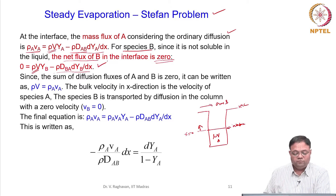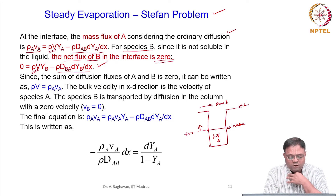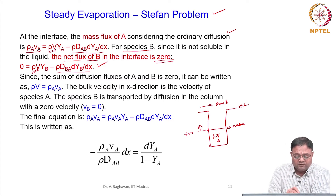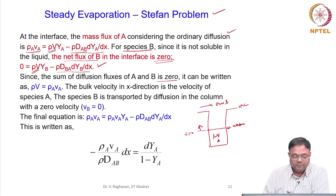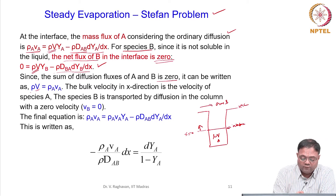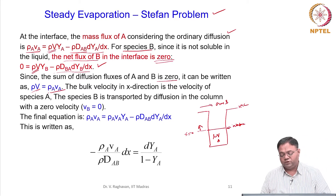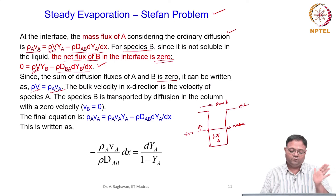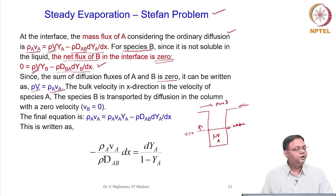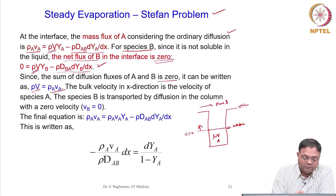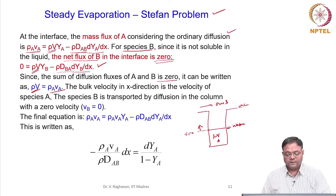This is the net flux of B. Since the sum of diffusion fluxes of A and B is zero, as already proved, it can be shown that rho * V equals rho_A * V_A. In the x direction the only convection is due to the transport of A only, so the bulk convection rho * V equals rho_A * V_A.